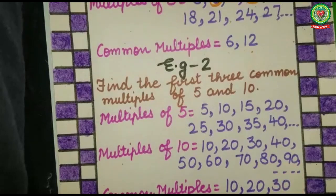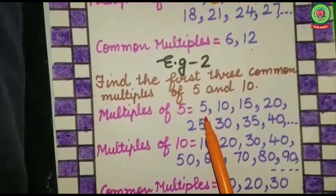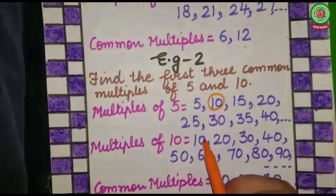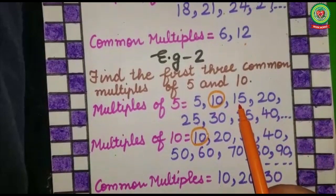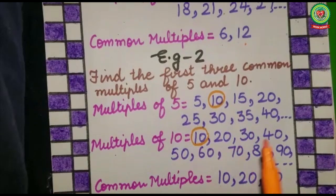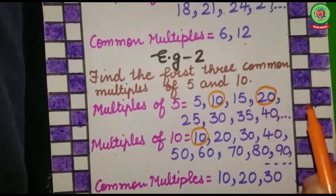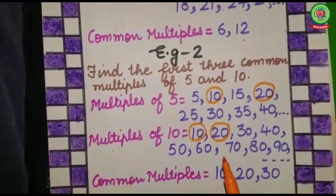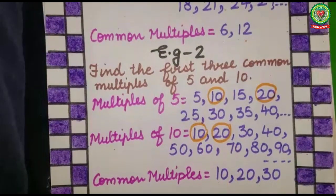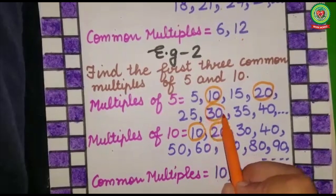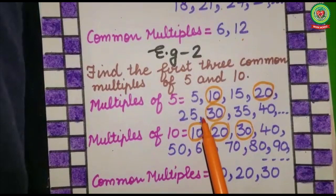Now let's check the common multiples. Five is a multiple of five but not of ten. Ten is a multiple of five and also a multiple of ten, so circle ten. Fifteen is a multiple of five but not of ten. Twenty is a multiple of five and also a multiple of ten, so circle twenty. Twenty-five is a multiple of five but not of ten. Thirty is a multiple of five as well as ten, so circle thirty.